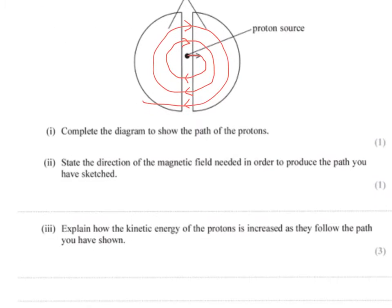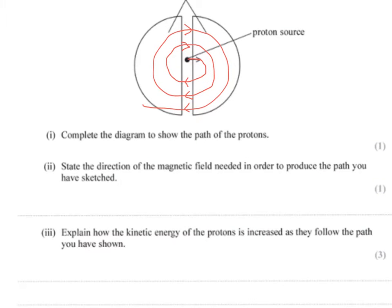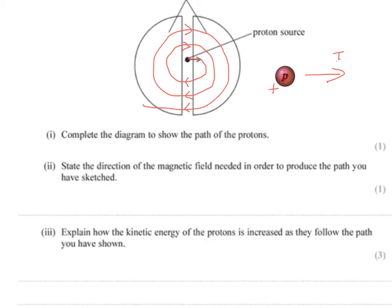Part two says: state the direction of magnetic field needed in order to produce the path you have sketched. This is the left-hand rule. If we imagine a proton heading that way, because this is a positive particle, that is going to be like a current — a proton flows from positive to negative. So its movement direction is going to be like a current.